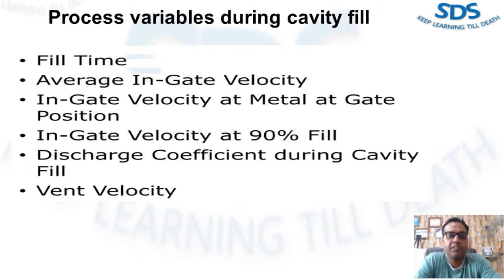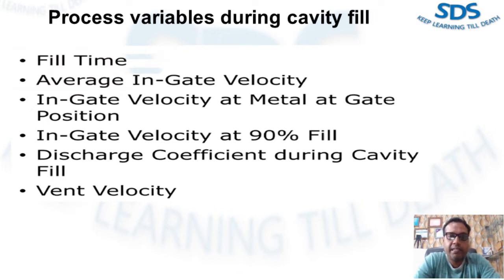The process variables that must be watched carefully during cavity fill — the first parameter is fill time. Fill time is the amount of time to fill out the die casting part cavity. This does not include the time to fill the overflow. Specifically, it is the amount of time to go from metal at in-gate position to metal at overflow gate position.